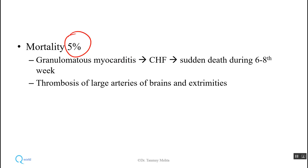It causes a five percent mortality rate due to involvement of heart muscle — myocarditis — which leads to congestive heart failure and sudden death during the larval migration phase. Sometimes thrombosis of large arteries of the brain may cause neurological symptoms and death.